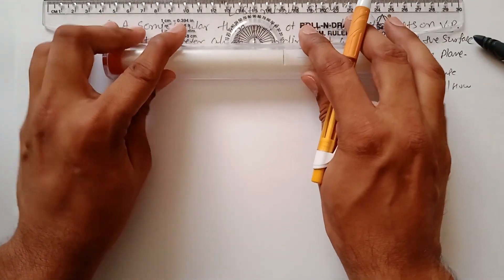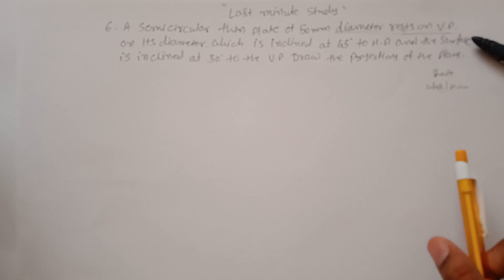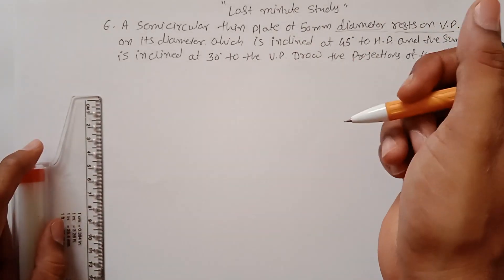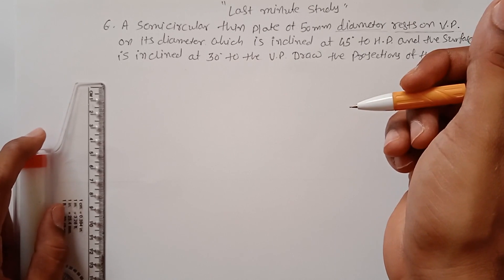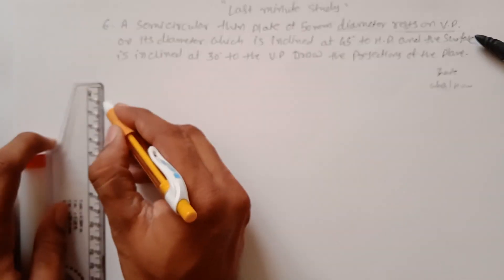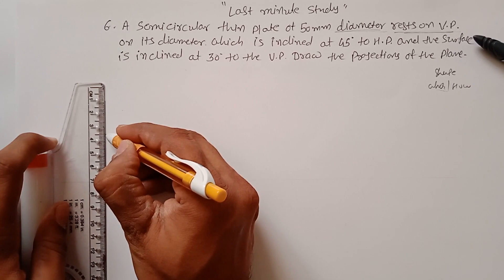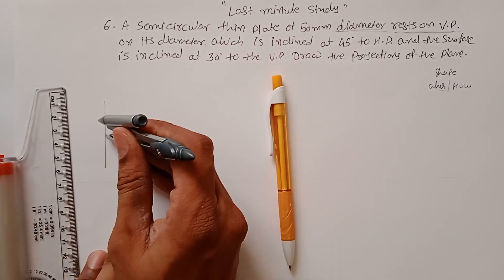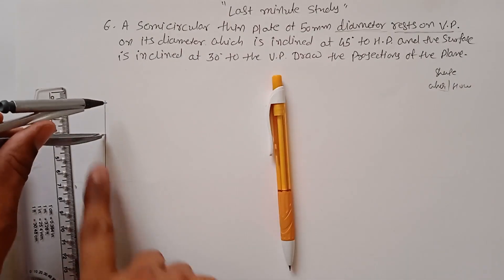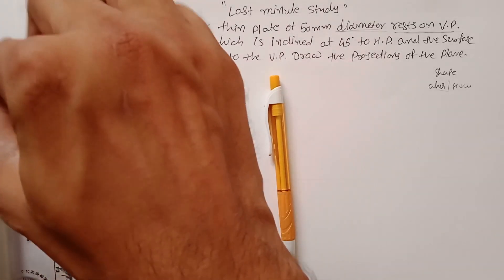To begin, draw the XY line. The diameter is resting on the VP at 50 mm, so first draw a 50 mm diameter line, find its midpoint, and complete a semicircle. The center point is marked and the semicircle has a diameter of 50 mm.